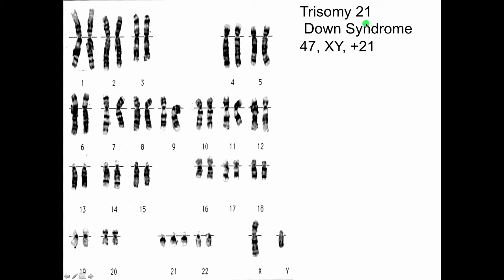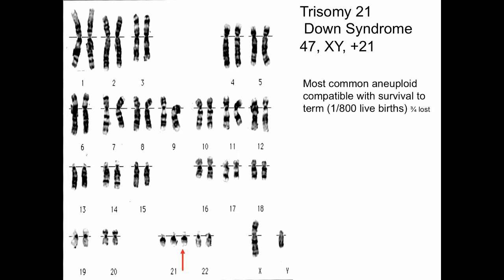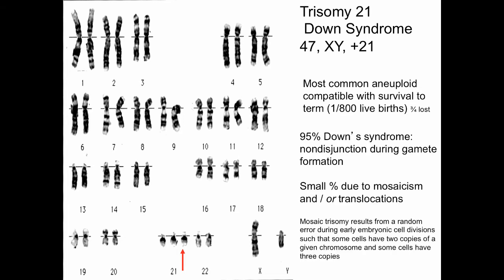Here is a karyotype with trisomy 21, so-called Down syndrome, represented as 47XY — because it's a male — with an additional chromosome 21. Trisomy 21 is the most common aneuploid compatible with survival to term, occurring in about 1 in 800 live births. Three-fourths of trisomy 21 conceptuses are lost spontaneously. About 95% of Down syndrome results from nondisjunction during gamete formation, with a small percentage due to mosaicism and/or translocations.